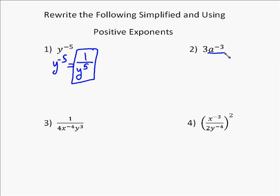On number 2, we've got to do the same thing. Now it's important to understand that the 3 has the power of 1, not the negative 3, so the 3 stays in the numerator. However, the a to the negative 3 becomes the denominator with a positive power instead of a negative. So the solution is 3 over a to the third.